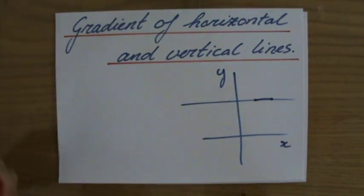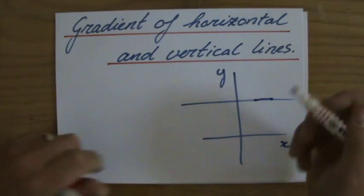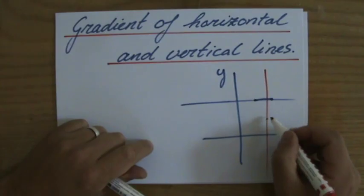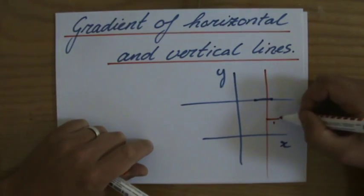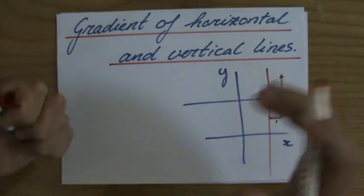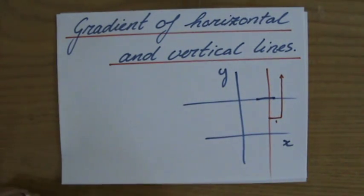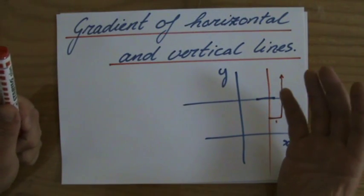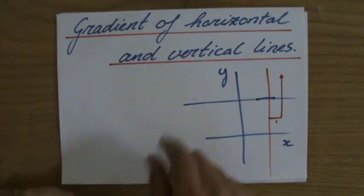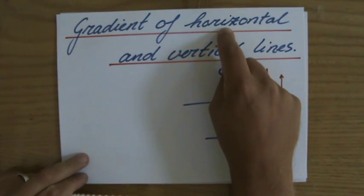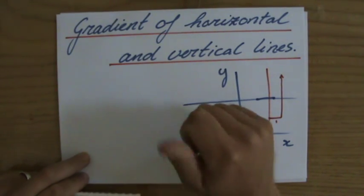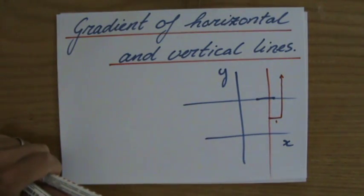A vertical line — somebody asks you, give me the gradient of a vertical line. Let's quickly sketch a vertical line like this. That gradient — I'm on my line, I go one step to the right. How many steps do I go up? Well, that's going to be an infinite amount of steps. So do you have to remember that? Absolutely not, because you can always reproduce that information for yourself and prove it. The gradient of a horizontal line: zero. The gradient of a vertical line: infinite. Fantastic — well done, and I'll see you soon. Bye-bye.